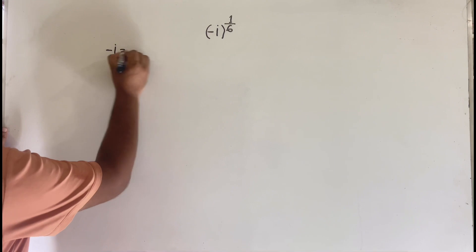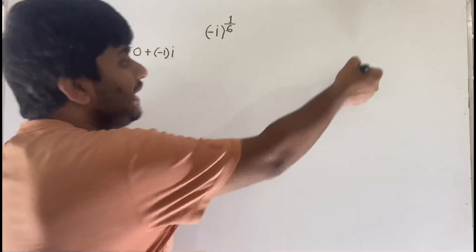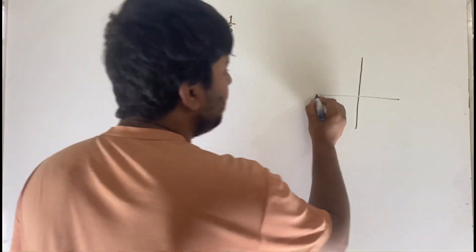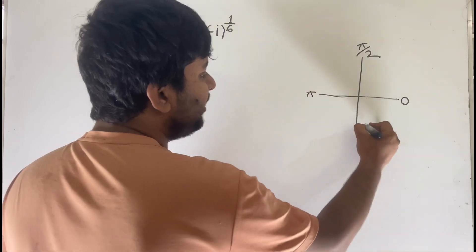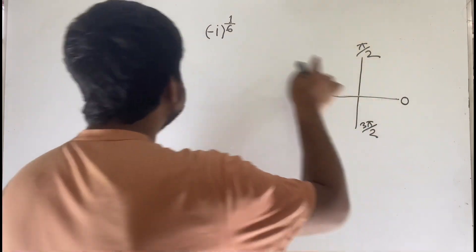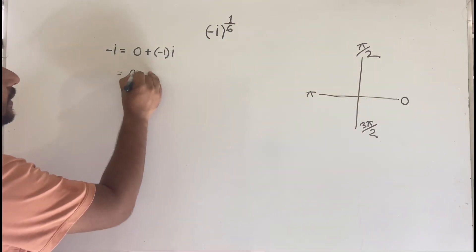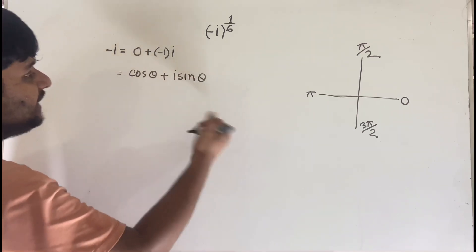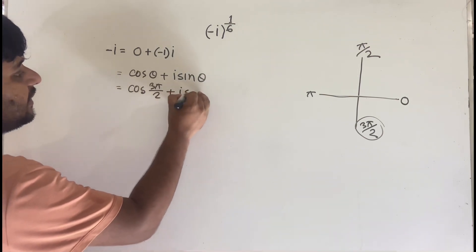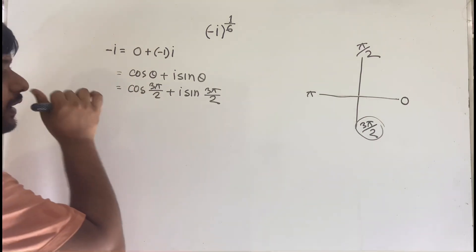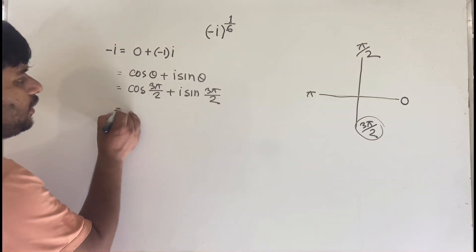First of all, I can write minus i as 0 plus i times minus 1, where the real part is 0 and the imaginary part is minus 1. If I draw this, here is 0, this is π over 2, here is π, and this is 3π over 2. In this case the real part is 0 and the imaginary part is minus 1, so our angle is 3π over 2. So we can write: cos(3π/2) + i·sin(3π/2). Now cos(3π/2) equals 0 and sin(3π/2) equals minus 1, so this gives 0 + i·(minus 1), which is minus i — correct.